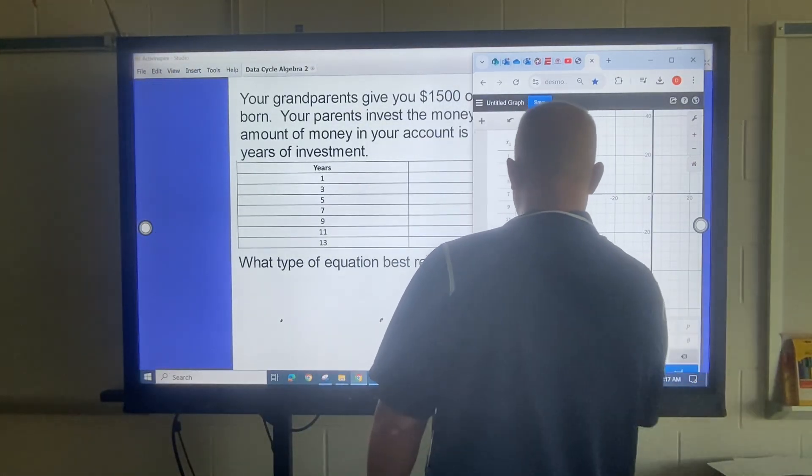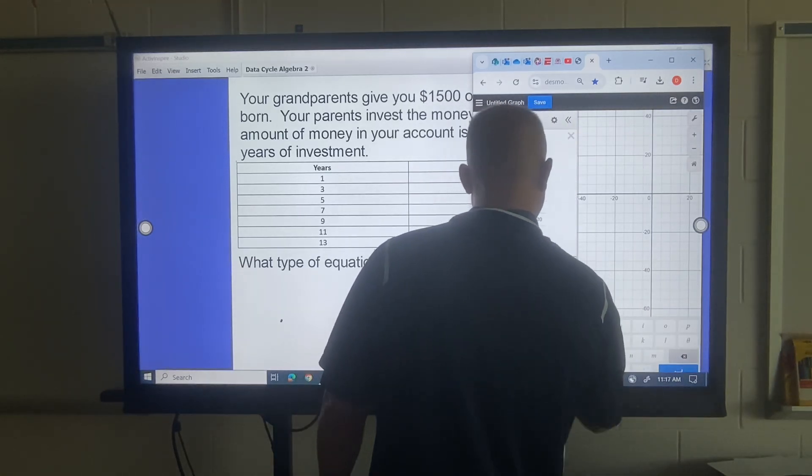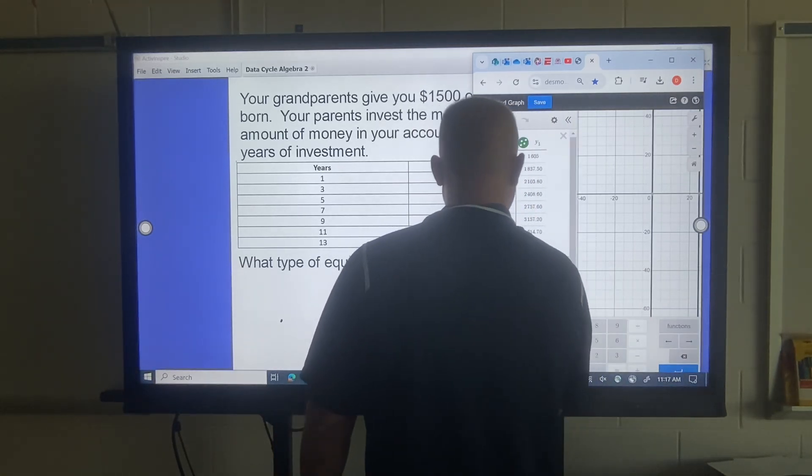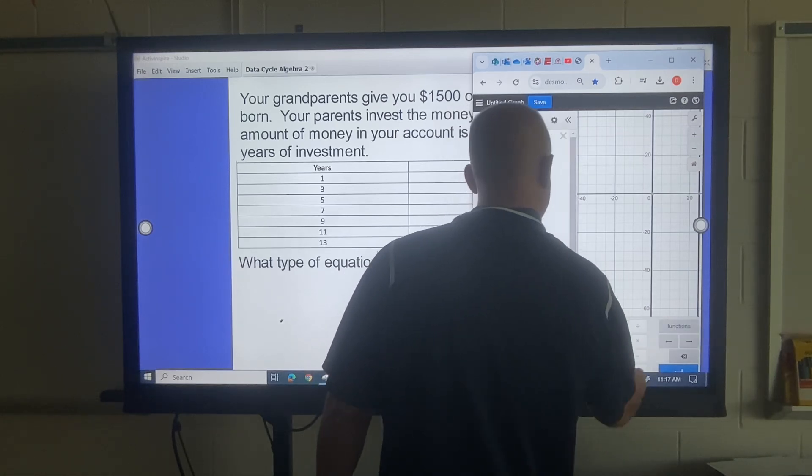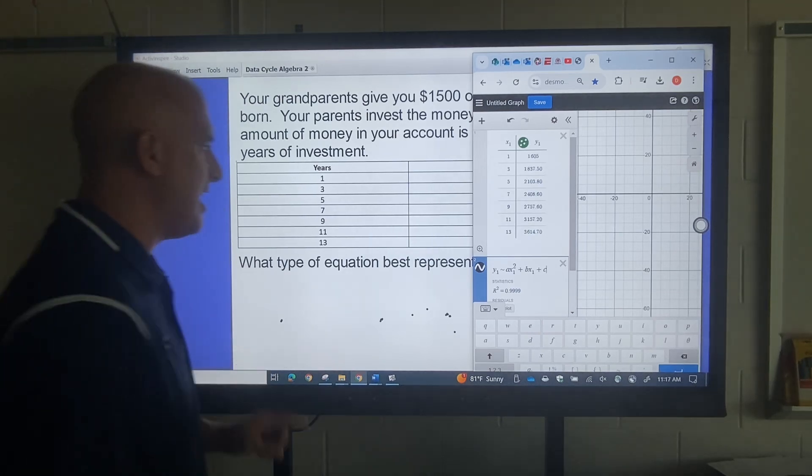Now, let's check the quadratic, see if that one's any better. AX squared plus BX1, plus C. That's pretty good. 0.99999.